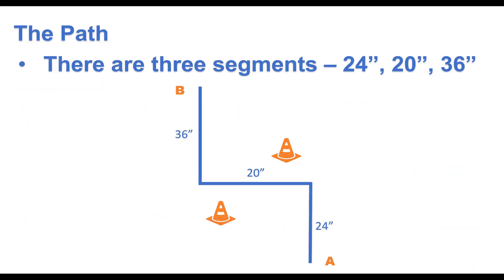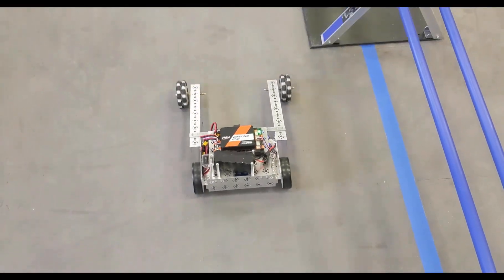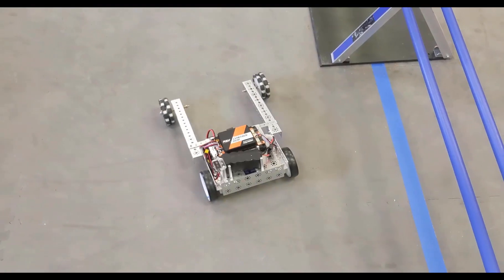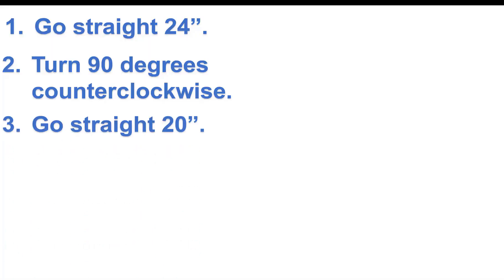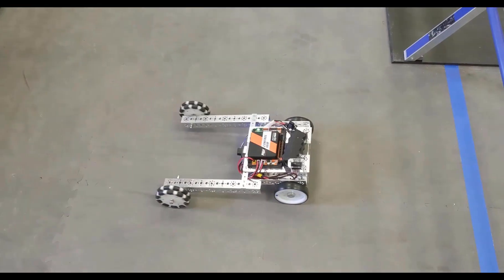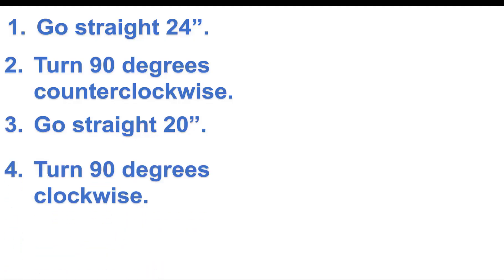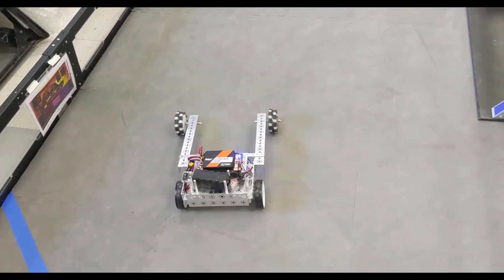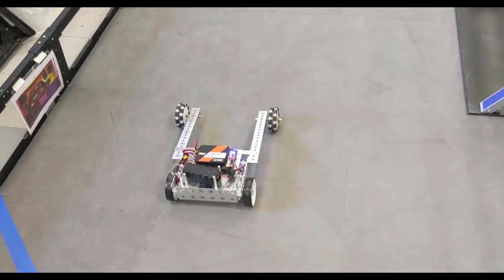So we want to program the robot to move straight 24 inches, turn 90 degrees counterclockwise, then move straight 20 inches, turn 90 degrees clockwise, then move straight 36 inches.